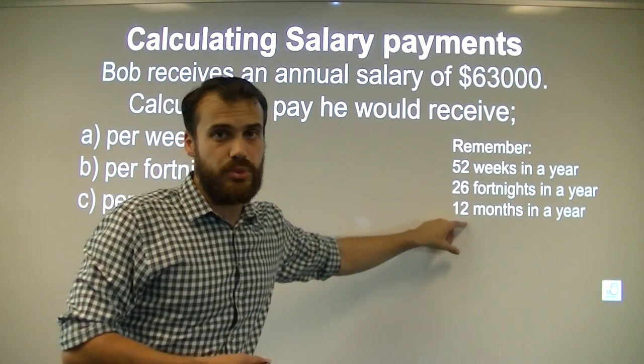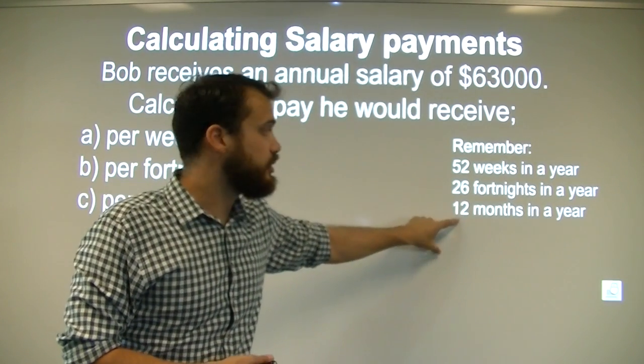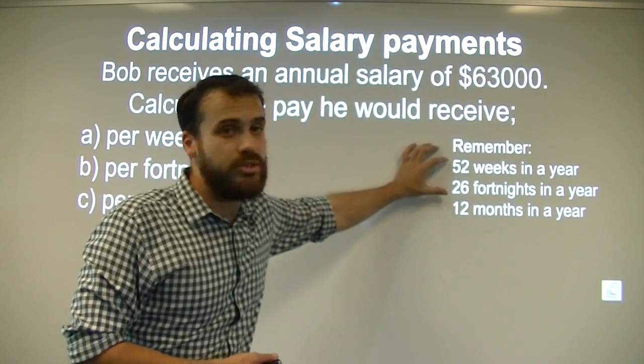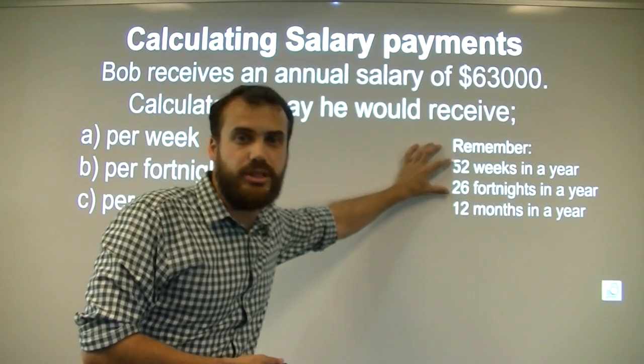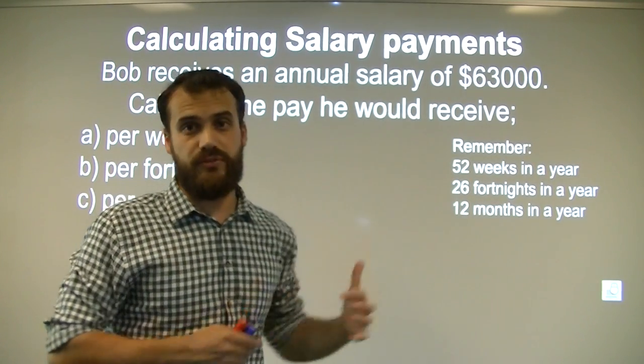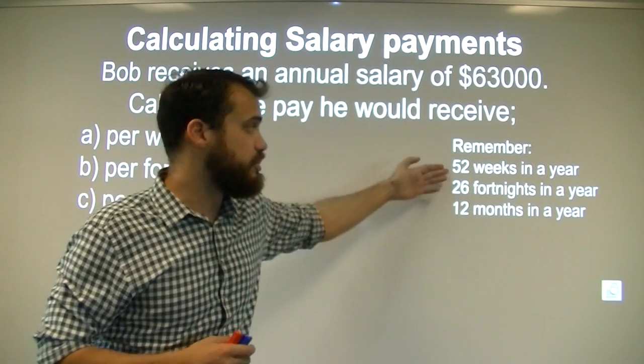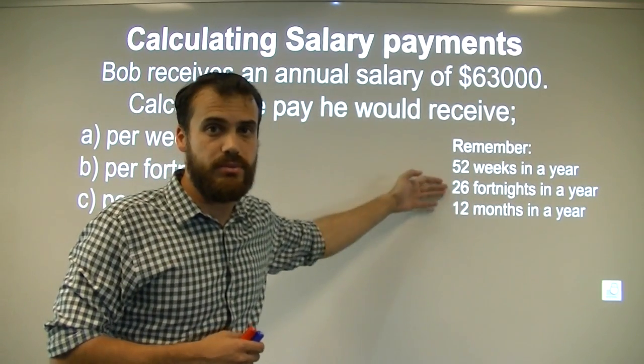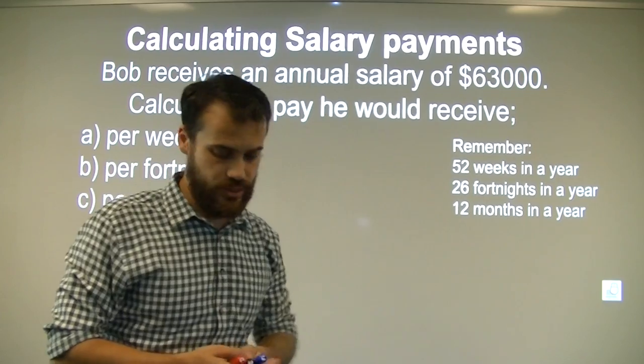Everyone seems to get the 12 months in a year correct, but the other two occasionally people get wrong — they think there are 54 weeks or 50 weeks. So just make sure you take the time to memorise those ones.